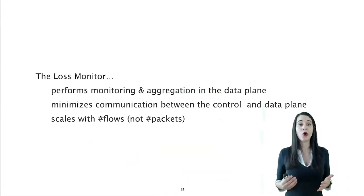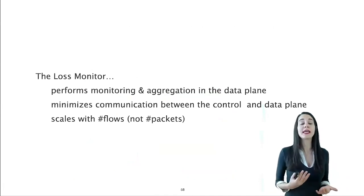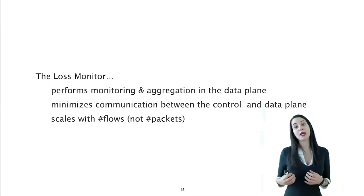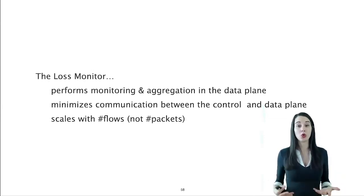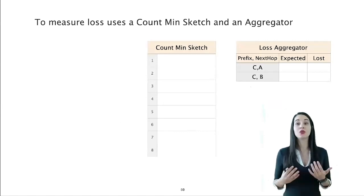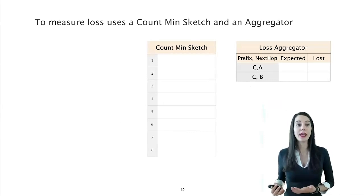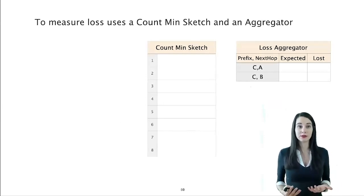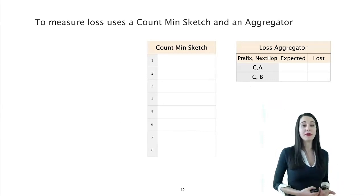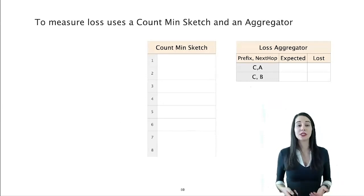Unlike all alternative solutions, our loss monitor performs monitoring and aggregation in the data plane, minimizes communications between control and data plane, and scales with the number of flows, not with the number of packets. To achieve this, our loss monitor leverages the fact that in TCP, every incoming packet foretells the header of the next one of the same flow. So instead of storing all packets in the data plane, our loss monitor just stores the expected packet for its monitored flow. In particular, the loss monitor uses a count-mean sketch to detect retransmission, and a single 2D array for aggregating the results. This array, namely the loss aggregator, stores the number of expected and retransmitted packets per pair of prefix and next hop.